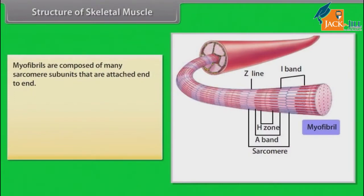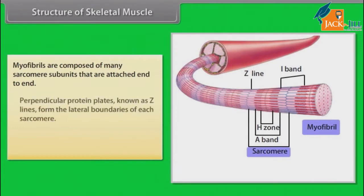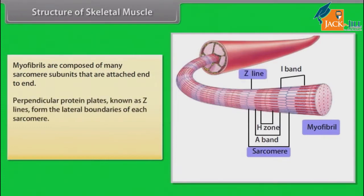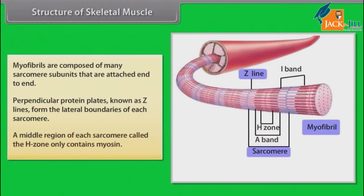Myofibrils are composed of many sarcomere subunits attached end to end. Perpendicular protein plates known as Z-lines form the lateral boundaries of each sarcomere. A middle region of each sarcomere called the H-zone contains only myosin.